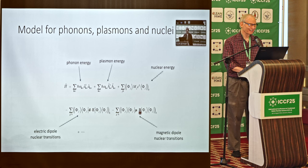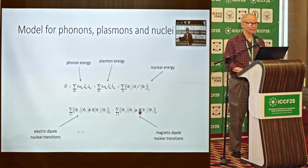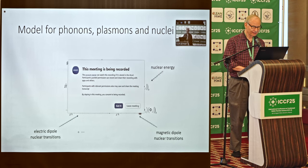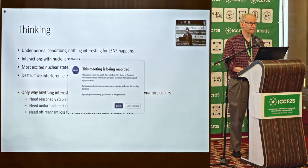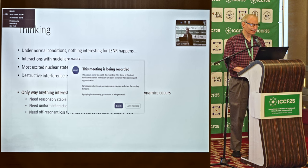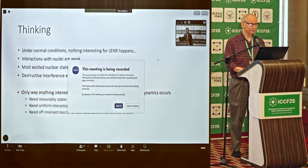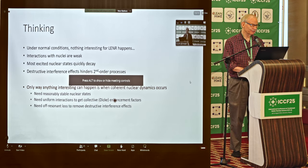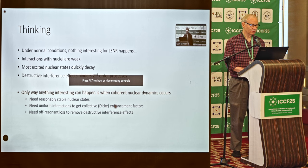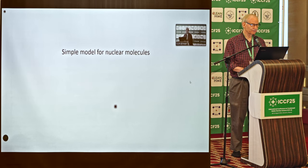Let me just get into it. I have a lot of slides, so I'll go fast through the ones that are less important and slow through the ones that are more important. At the beginning, we considered a model where we had nuclei interacting with the lattice. Under normal conditions, nothing interesting happens. The interactions with the nuclei are weak. Excited states decay quickly. Destructive interference destroys second-order processes. The only way to proceed was we needed reasonably stable nuclear states, uniform interactions, and off-resonant loss to get rid of the destructive interference effects.